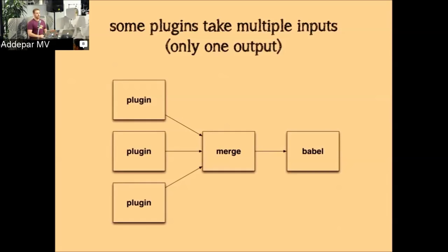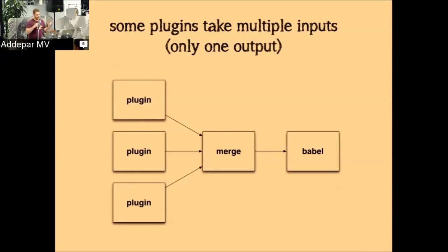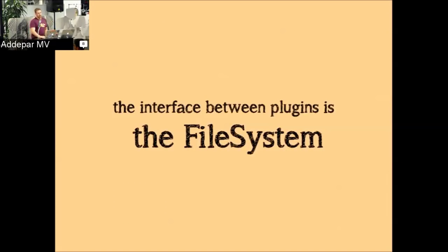Some plugins take multiple inputs. An example is Merge — sometimes you want to take the result of three different build pipelines and combine them into the same final output. If you have a test tree and an app tree, both concatenated, in the end you want to serve them from the same public directory, so you merge these two trees — just squash the two directories together left to right. The interface between plugins is the file system, so any tool that can read from the file system can cooperate in a Broccoli build pipeline.